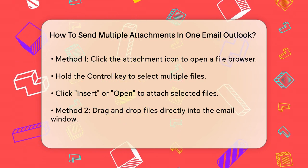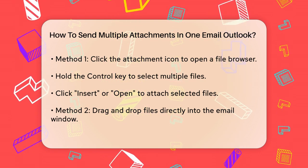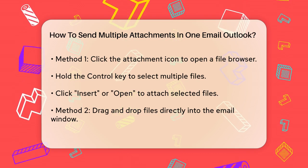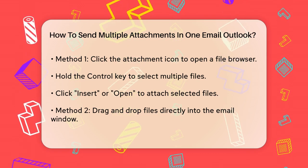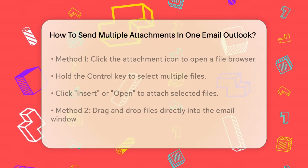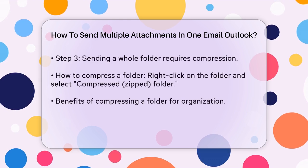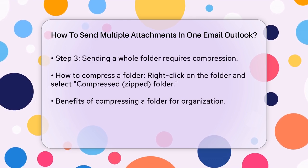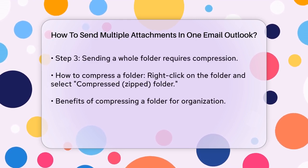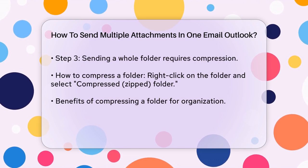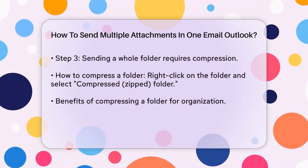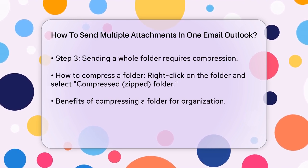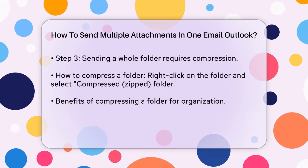If you need to send a whole folder full of files, you'll need to compress the folder first. To do this, open File Explorer, locate the folder you want to attach, right-click on it, and select Compressed Zipped Folder from the Send To menu. Once the folder is compressed, you can attach it to your email just like any other file.